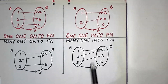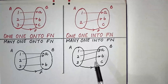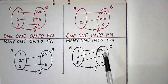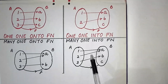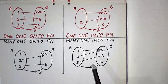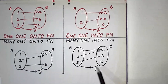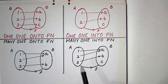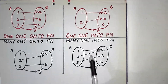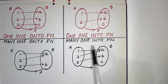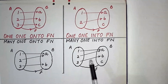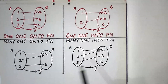If a function is both many-one and into, then it is called a many-one into function. Here the second element 'a' of ordered pairs is repeated, so this is many-one, and the range is not equal to co-domain, so this is into. Therefore this is an example of a many-one into function.